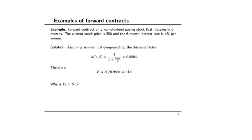Let's apply the pricing formula to a specific example: a forward contract on a non-dividend-paying stock maturing in six months. The current stock price is $50, which is S_0 in the formula. The six-month interest rate is 4% per annum, so the actual six-month rate is 4% divided by 2 equals 2%. Therefore D(0, 0.5) equals 1 divided by 1.02, which gives approximately 0.9804. Plugging into the formula, F equals 50 divided by 0.9804, which equals $51.